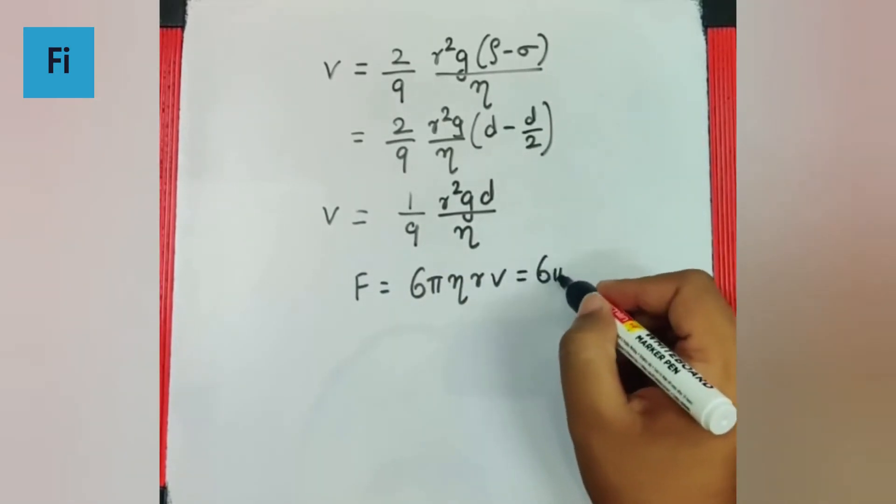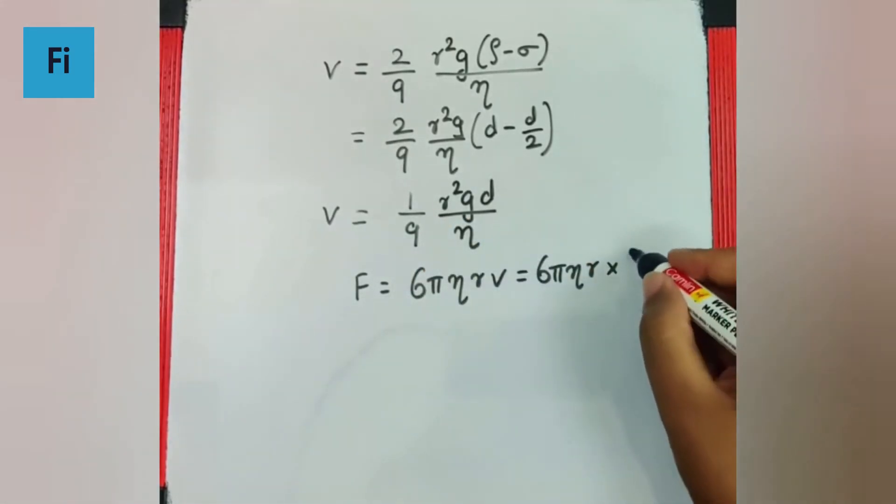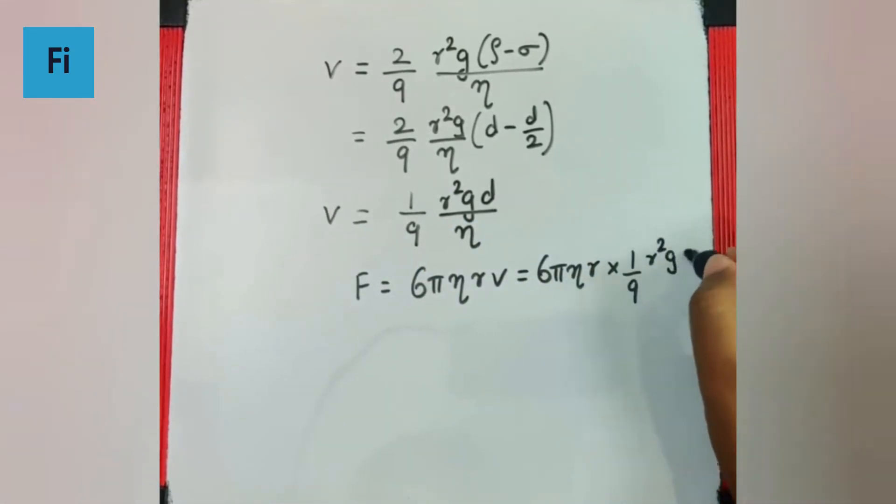So if I substitute the formula or the value of velocity we got, it will be 1 by 9 R square G d by eta. So definitely this eta gets cancelled.